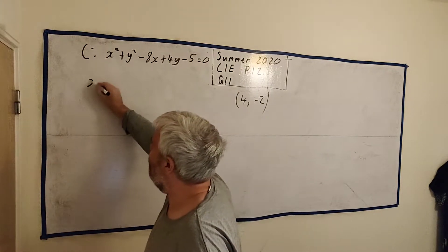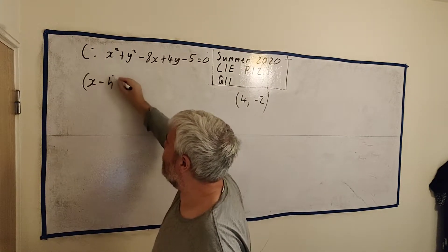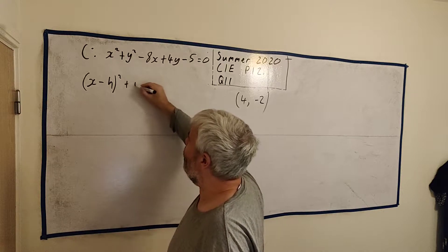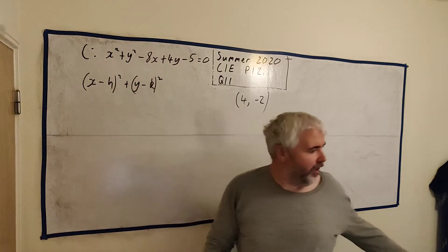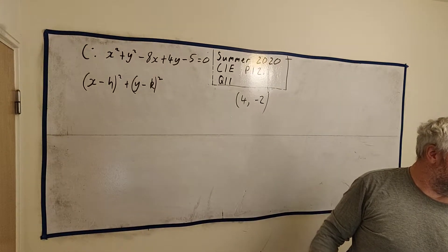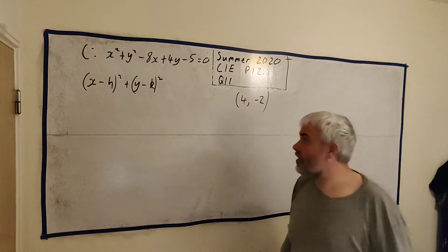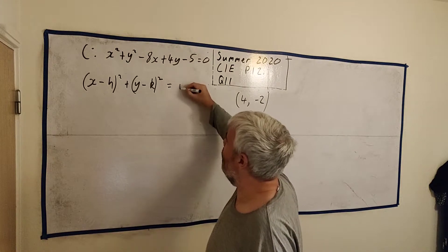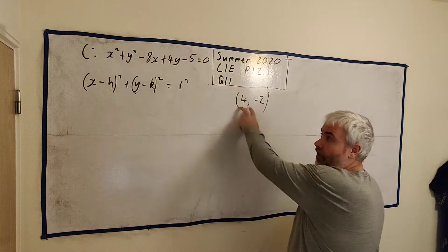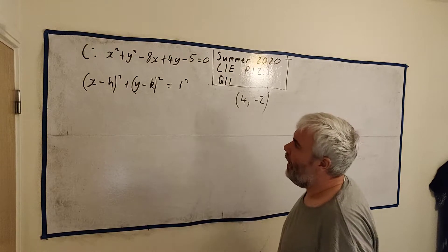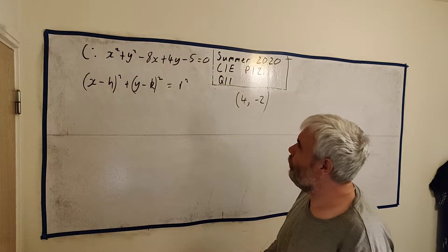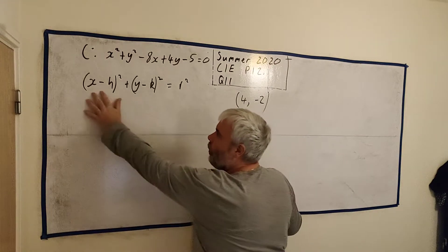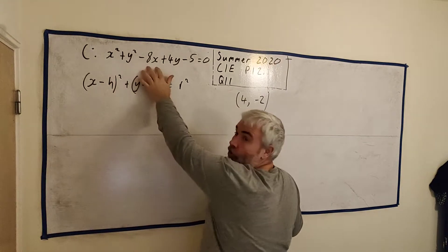The other formula for a circle we tend to use is x minus h squared plus y minus k squared. Have I got these letters wrong? I often do. Let me double check. No it's h and k, equal to r squared. Now if I use this knowledge this would be quite quick, but a better way to do it would be have a think. How do we get from here to up here?